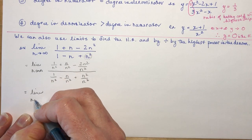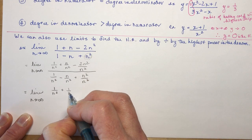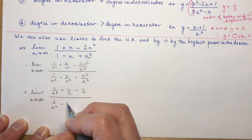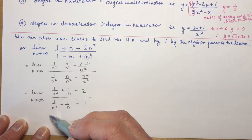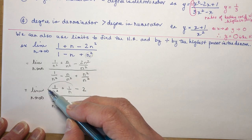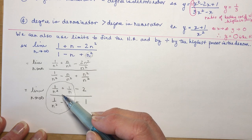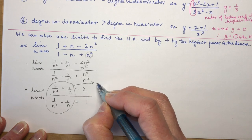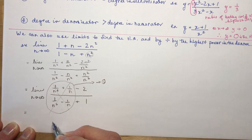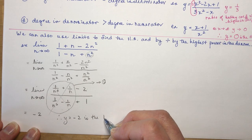After dividing by n², the numerator becomes (1/n²) + (1/n) − 2 and the denominator becomes (1/n²) − (1/n) + 1. As n approaches infinity, all terms with n in the denominator approach 0 — because you're dividing 1 by very large numbers. You cannot cancel these across the fraction line; you can only cancel factors that are multiplied. You're left with −2 over 1, so the limit is −2.